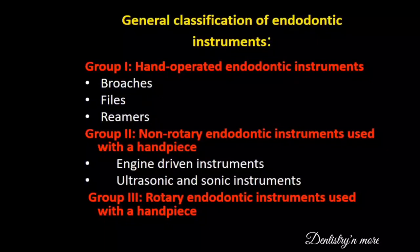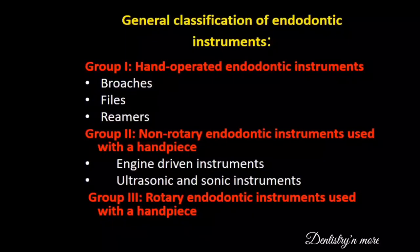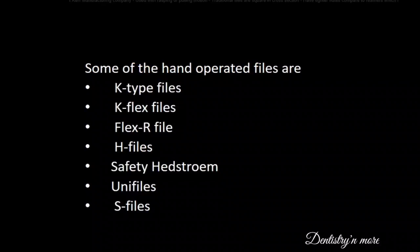The general classification of endodontic instruments: Group one — hand-operated endodontic instruments, which includes broaches, files, and reamers. Group two — non-rotary endodontic instruments used with a handpiece, which includes engine-driven, ultrasonic, and sonic instruments. Group three — rotary endodontic instruments used with a handpiece. Some of the hand-operated files are K-type files, K-flex files, Flexar files, H-files, safety Hedstrom files, uni files, and S-files.